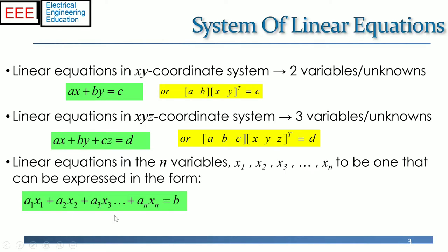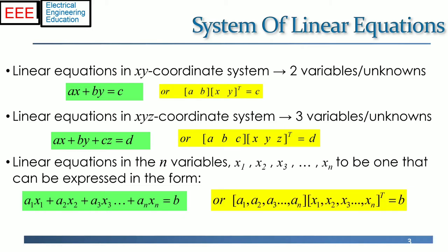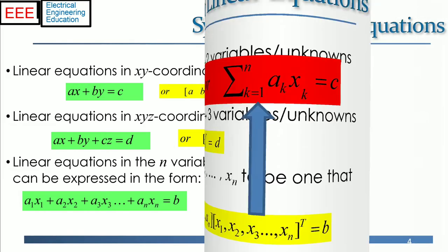Generally, the linear equations in n variables x1, x2, x3, up to xn, can be expressed in the sum of product form: a1·x1 + a2·x2 + a3·x3 + ... + an·xn = scalar b, which in dot product notation is the multiplication of the vectors as shown.